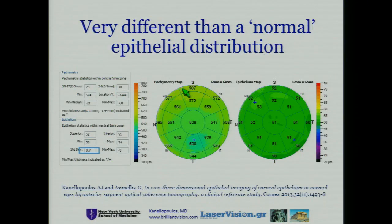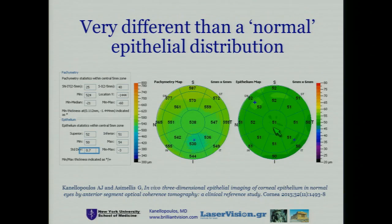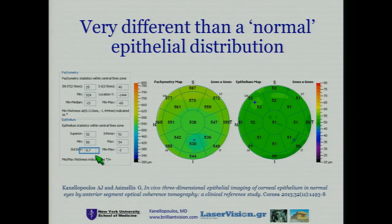Here we can see how a normal epithelial distribution looks — it's all green, as Dr. Asimel has told you before. We can also see the standard deviation, which is 0.7, and this is an interesting thing to note.